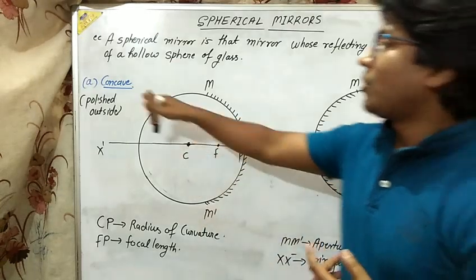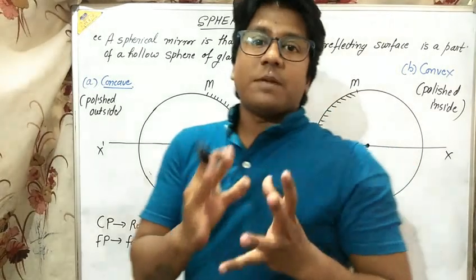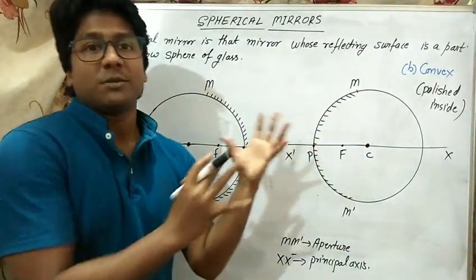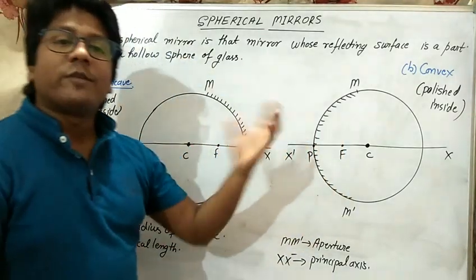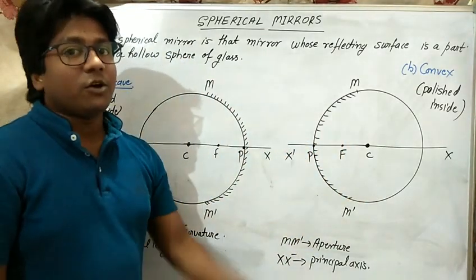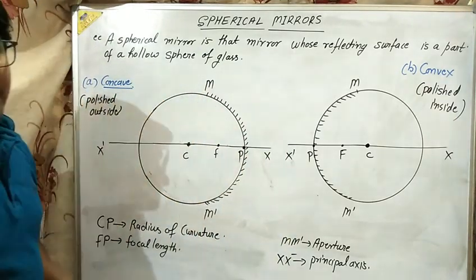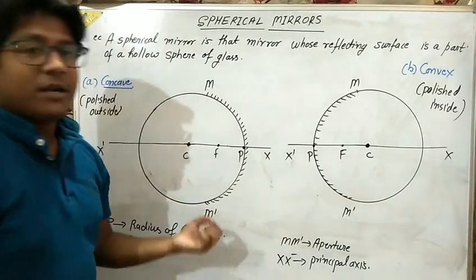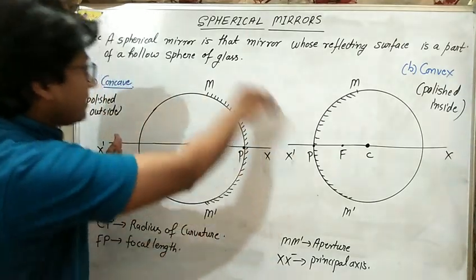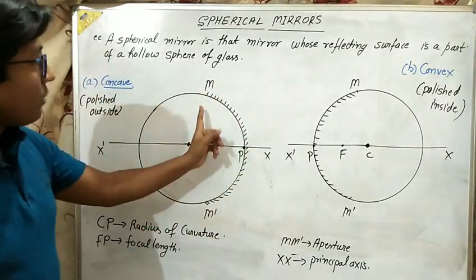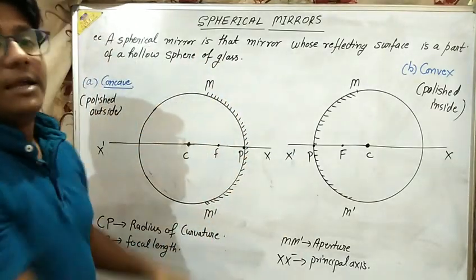Here I have shown two parts cut from a sphere to justify the concept of concave and convex. Concave mirror is a kind of mirror which is polished from the outside — when you talk about a sphere, the concave mirror is polished from the outside, meaning the inner side is not polished, the outside is polished.